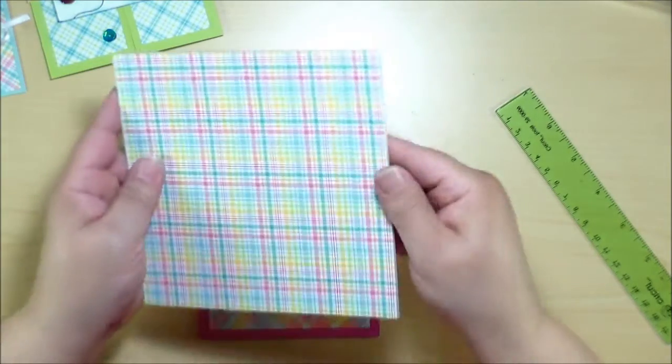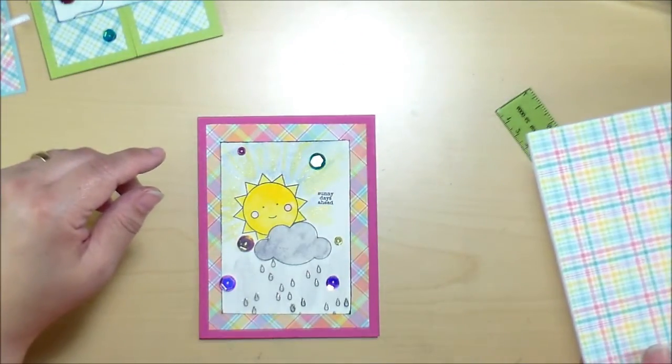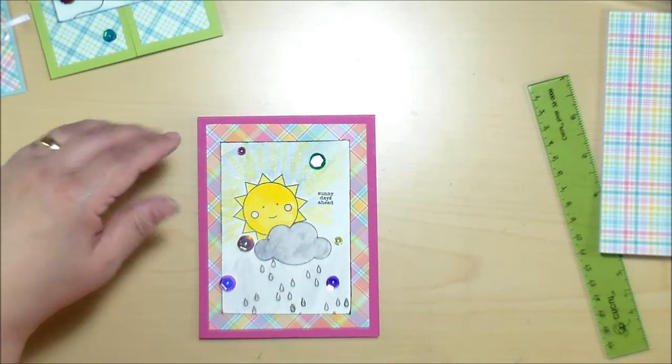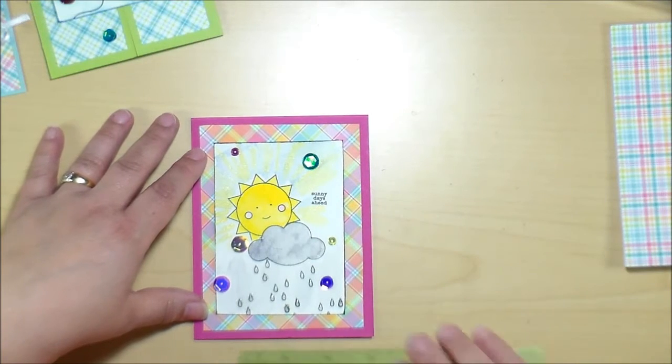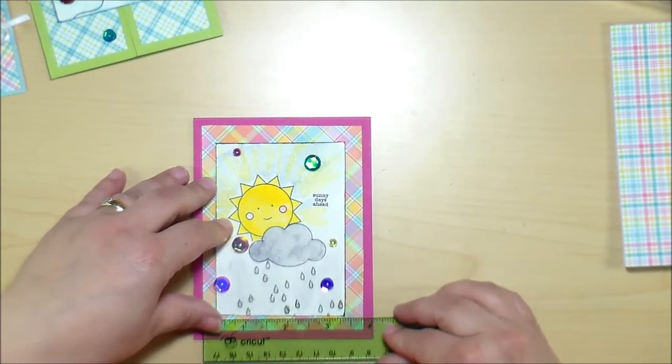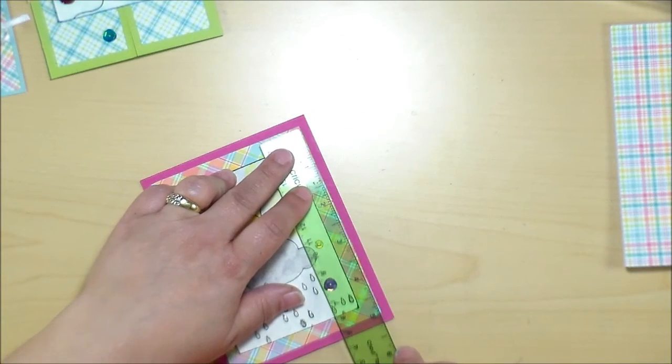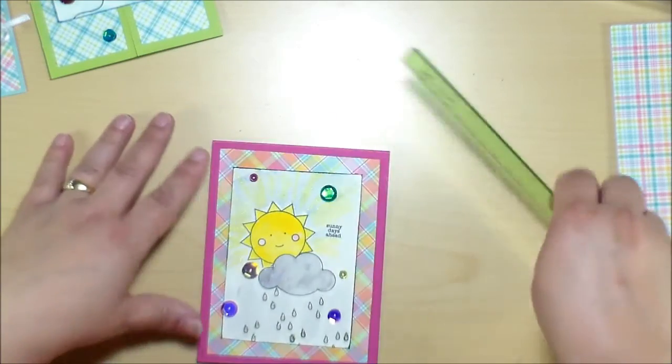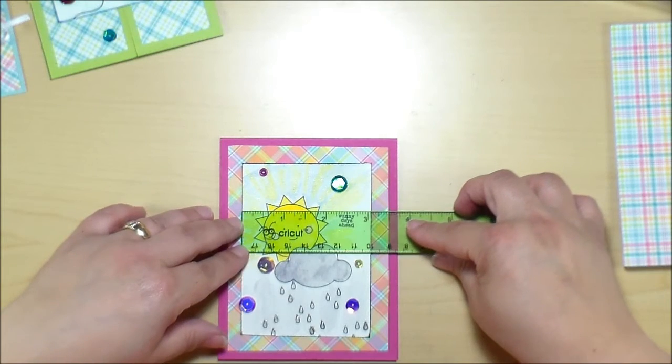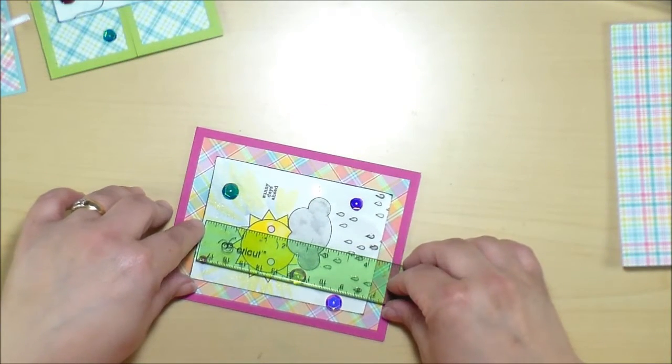Then I cut a piece of the decorative paper that came, this is Lawn Fawn paper I think. So I cut a piece of Lawn Fawn paper about three and three-quarter inches by five inches. And then I cut a piece of watercolor paper, it's Fabriano Studio watercolor paper, at three inches by about four and a quarter inches.